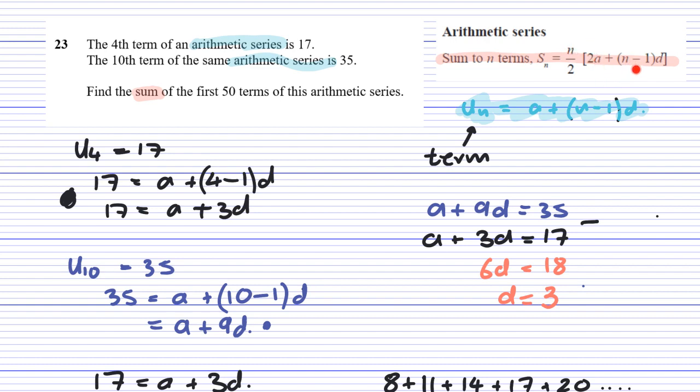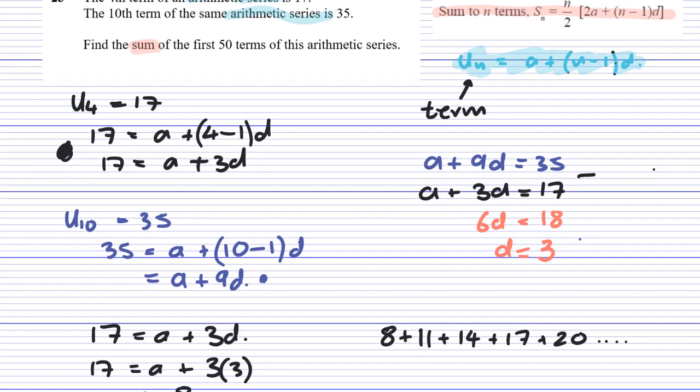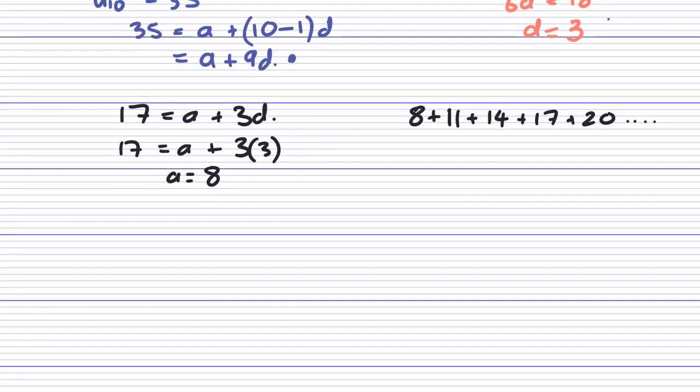N is going to be 50. We know A is 8, and we know that D is 3. So if we take that formula, we can substitute that into the question for us. Let's have a crack at writing this out. And now we can take the formula that we were given, SN, and N is 50.